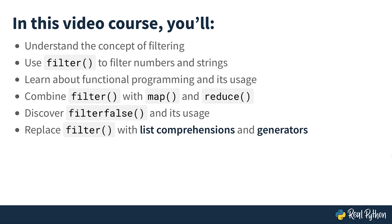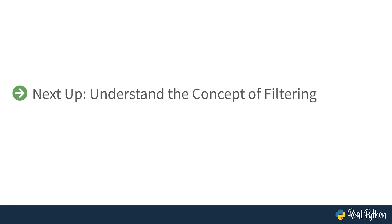Now let's talk about what you're going to do in the next few lessons. You'll start by understanding the filtering concept, where you will learn how to create filtering conditions. After that, you'll use Python's filter function to filter numbers and strings — for example, filtering odd numbers from a list and finding palindrome strings. Then you're going to explore functional programming and pure functions, the map and reduce functions, the filterfalse function, and finally, how you can replace filter with list comprehensions and generators. Are you ready? Next up is understanding the concept of filtering.